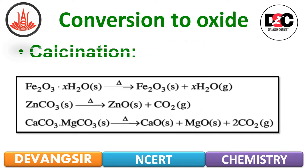Conversion to oxide — the first technique is Calcination. Calcination involves heating when the volatile matter is driven off, leaving behind the metal oxide. For example: Fe2O3·XH2O on heating gives Fe2O3 and water; ZnCO3 on heating gives ZnO and CO2; CaCO3·MgCO3 on heating gives CaO, MgO and CO2.